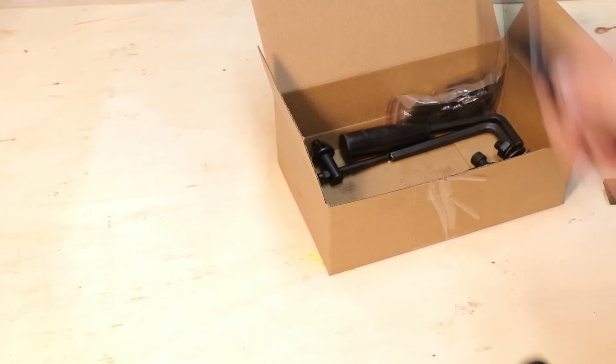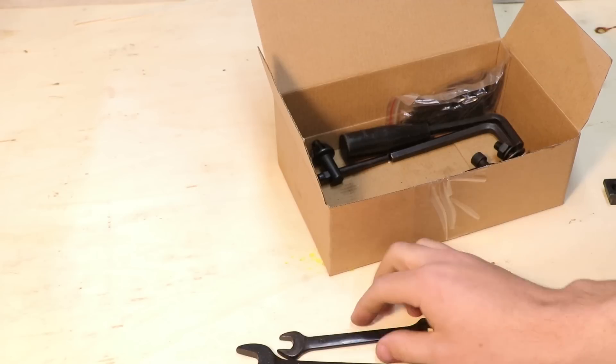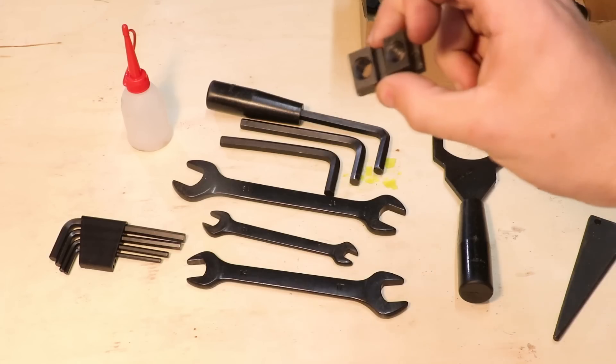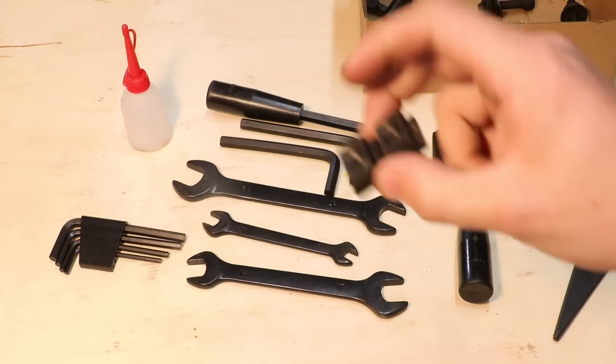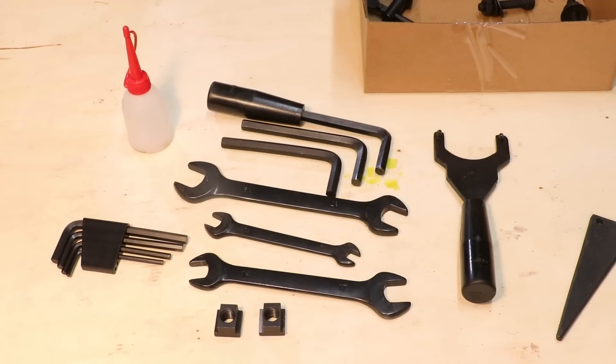You also get the regular accessories. Hex keys, several size wrenches, two T-slot nuts, an oiler bottle, and a C-wrench. And for what I paid, I'm pretty happy with what I got.